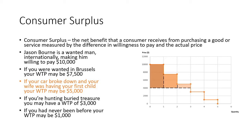Let's say the price drops to $4,000. Then we can look at the consumer surplus of each of these individuals again. Jason Bourne would get the difference between $10,000 and $4,000 — he would have a $6,000 consumer surplus.